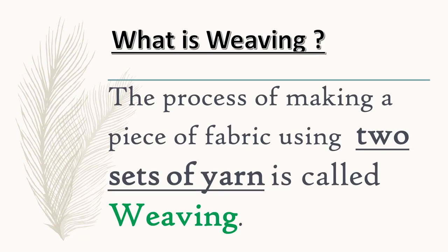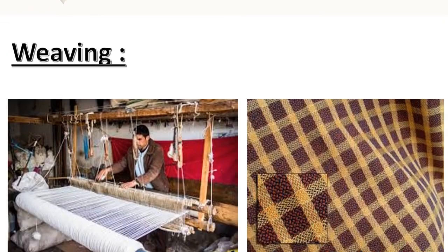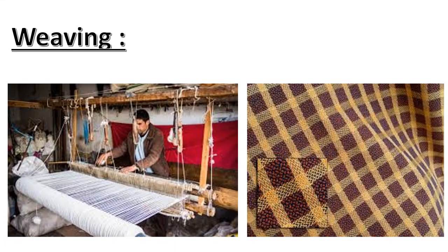We are also interested in knowing what weaving is. The process of making a piece of fabric using two sets of yarn is called weaving. As shown in this picture, weaving is done with the help of looms — here a handloom is shown.